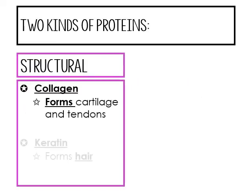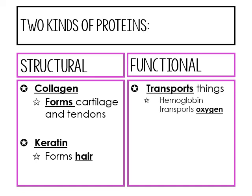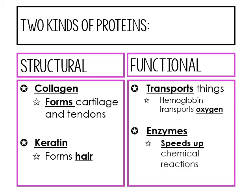Now let's talk about the two kinds of proteins: structural and functional. Structural proteins include collagen, used to form cartilage and tendons, and keratin, used for hair and nails. Functional proteins include hemoglobin, which transports oxygen throughout your body in your blood, and enzymes, which are functional proteins that speed up chemical reactions.